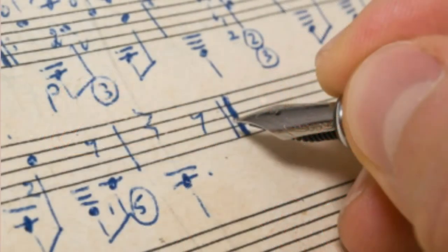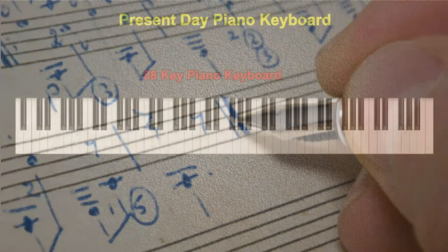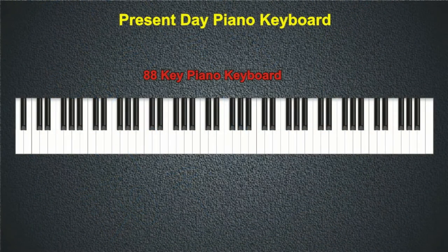Now the challenge becomes: how can I write something that will tell a musician that I want them to play a specific low, middle, high, or very high A, B, C, D, E, F, or G? For picturing the highness or lowness of a pitch, or range of pitches, it is generally agreed that the piano keyboard serves as the best visual aid.